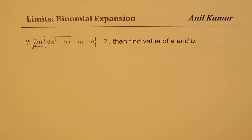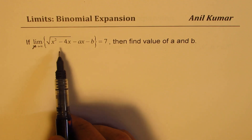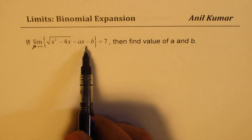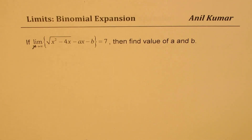The question is: limit x approaches infinity for square root of (x squared minus 4x) minus ax minus b equals 7, then find the value of a and b. You can always pause the video, answer the question, and then look into my suggestions.